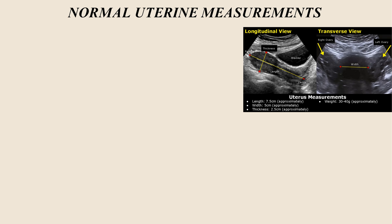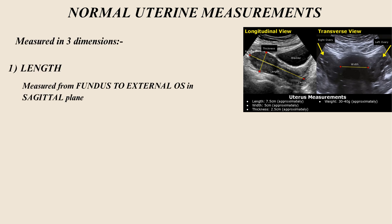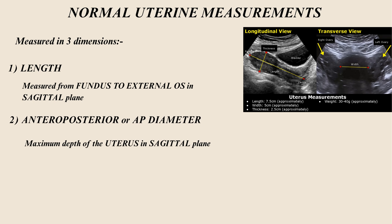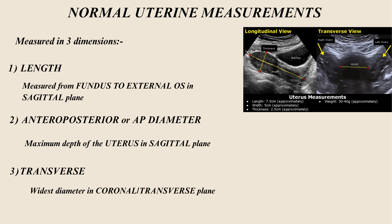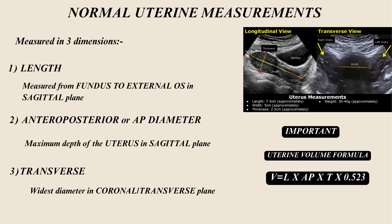The size of the uterus is measured in three dimensions. Number one is length, measured from the fundus to the external os in the sagittal plane. Number two is the anteroposterior diameter, which is the maximum depth of the uterus in the sagittal plane. Number three is the transverse diameter, which is the widest diameter in the coronal or transverse plane. Uterine volume is calculated as: V = L × AP × Transverse × 0.523.